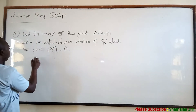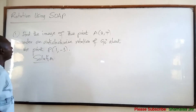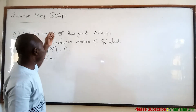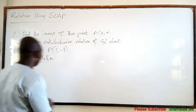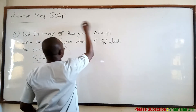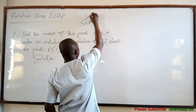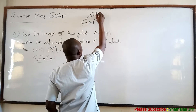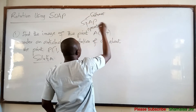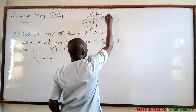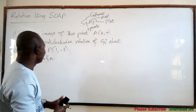So let us look at how you use the method known as SOAP to find a solution. SOAP simply means: S — Subtract, O — Operate, A — Add, and P — Plot. That is when you have to plot the image.